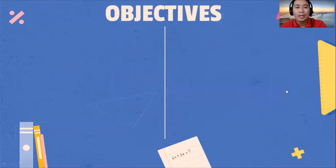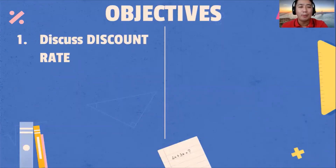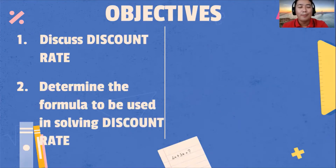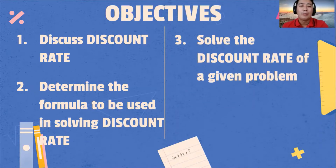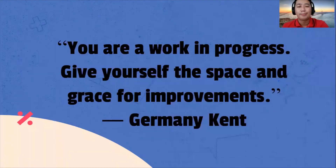What are the objectives of this lesson? Number one, discuss discount rate. Number two, determine the formula to be used in solving discount rate. And number three, solve the discount rate of a given problem. Those are the three objectives that we need to meet at the end of this lesson.